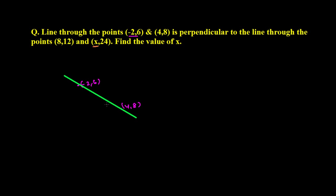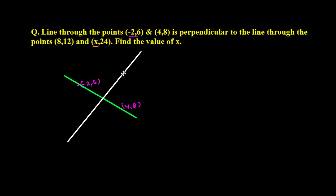This line joining the two points is perpendicular to the line through the points (8, 12) and (x, 24). So this line is perpendicular to another line, and that perpendicular line passes through the two points — one is (8, 12) and another is (x, 24).